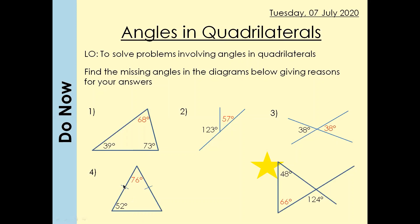These two tick marks mean this is an isosceles triangle. For an isosceles triangle, the base angles are equal — so if this angle is 52°, the other base angle is also 52°. In this case, one angle is 48° and another is 66°.